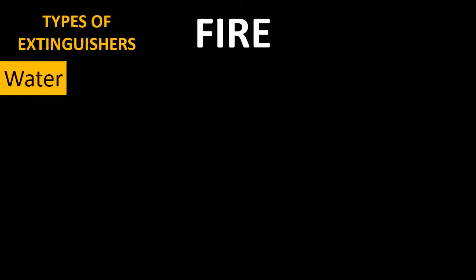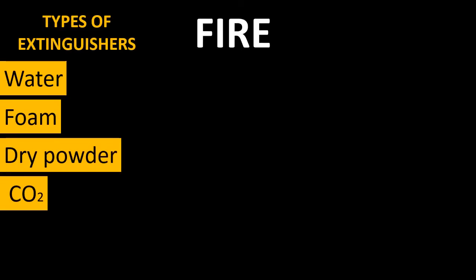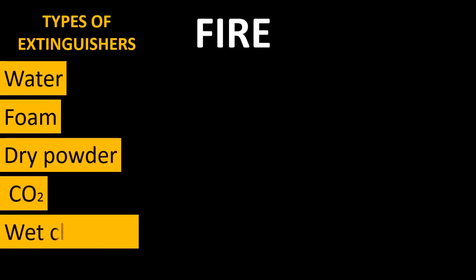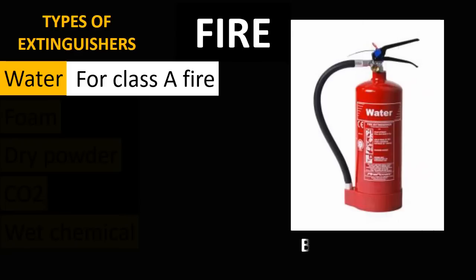Fire extinguishers could be of one of the following types: water type, foam type, dry powder type, carbon dioxide type, or wet chemical type. Water type fire extinguishers are used for Class A fires and they have a bright red label.